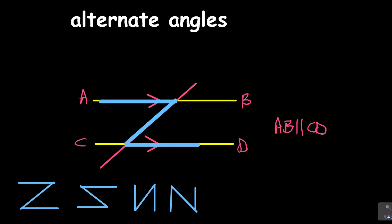Now look at this: if we're talking about alternate angles, we are saying if that angle here — we've got an angle here — look at that angle. It is equal to that angle. That's what we mean by alternate angles.